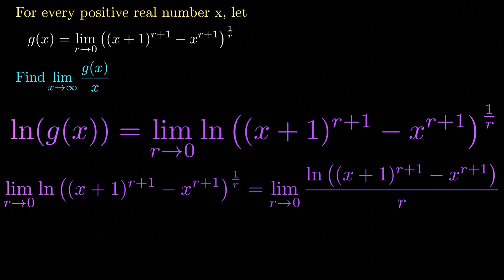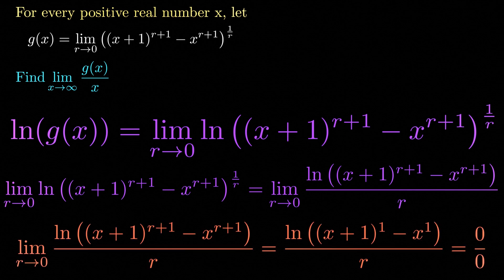If we evaluate this limit, the numerator is just the natural logarithm of 1, which equals 0, and the denominator r also goes to 0. So we have an indeterminate form of 0 over 0, and we can use L'Hôpital's rule to evaluate it.